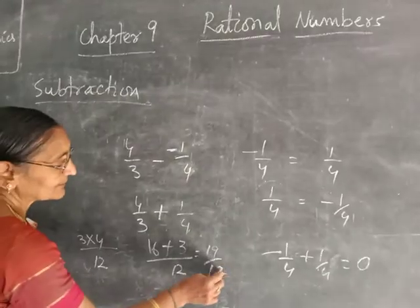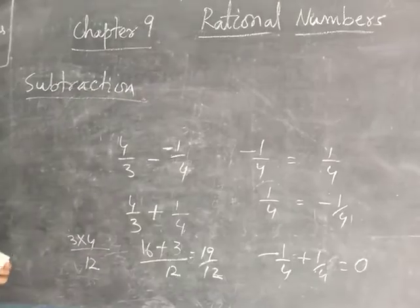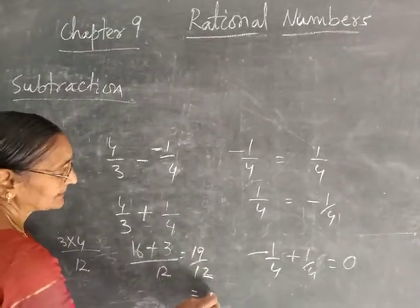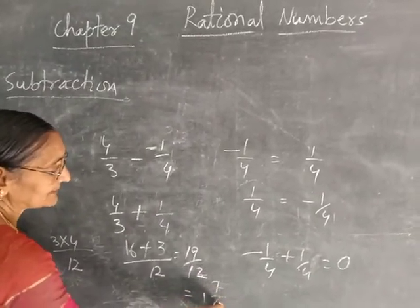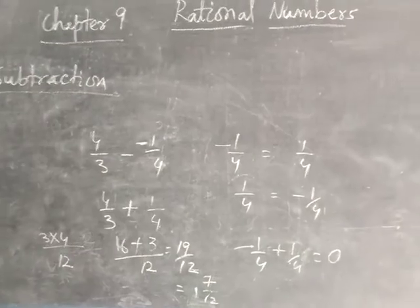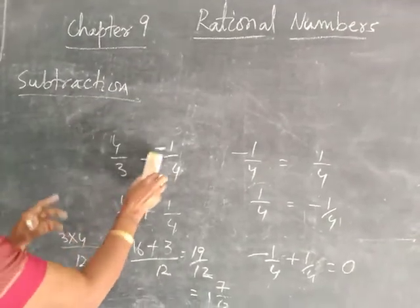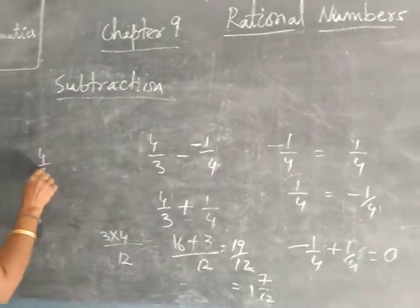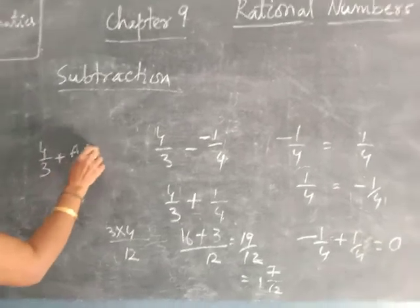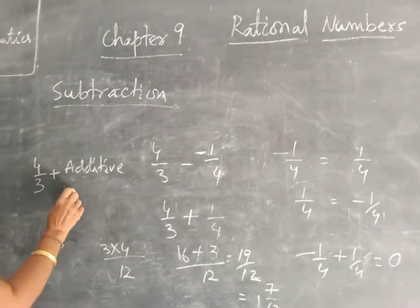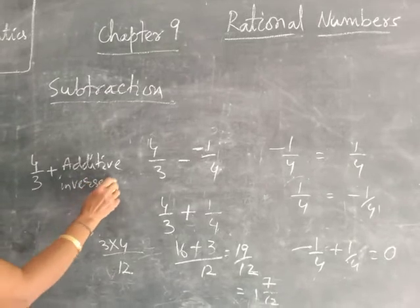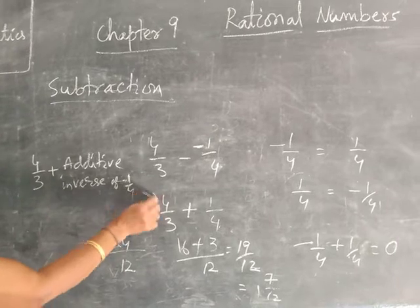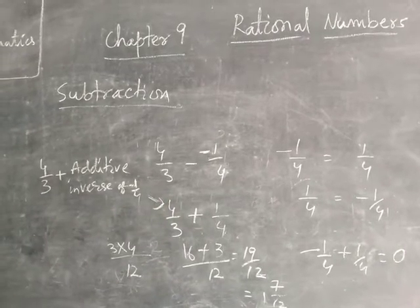19 by 12 — what type of fraction is this? It is an improper fraction, so you have to change it into a mixed fraction. If both numbers are negative, then you have to write the additive inverse. You write 4 by 3, and the additive inverse of minus 1 by 4 gives plus. Do you understand? Like that, you have to do the subtraction.